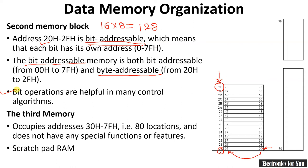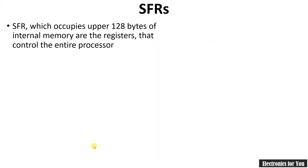The third block of data memory is the general-purpose RAM, also known as scratch pad RAM. It is used to store data and starts from address 30h, ending at 7Fh. This gives 80 locations. These locations have no special functions or features — they are just used to store data.